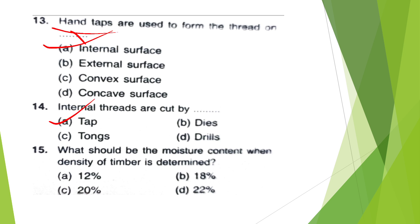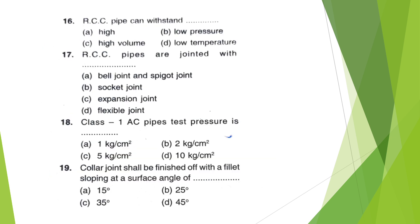What should be the moisture content when density of timber is determined? Options: 12%, 18%, 20%, 22%. The answer is option A — 12%.